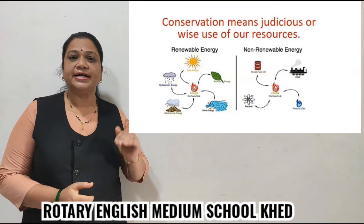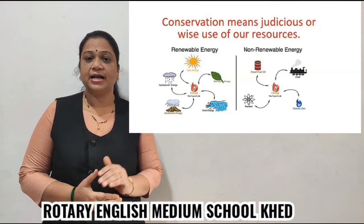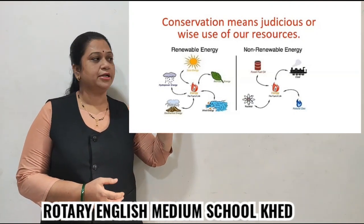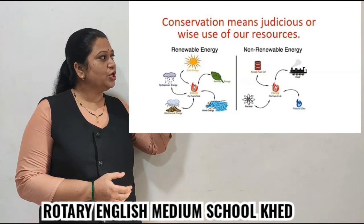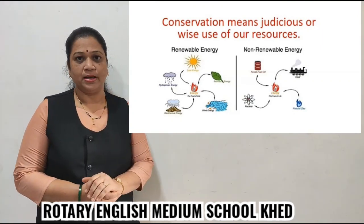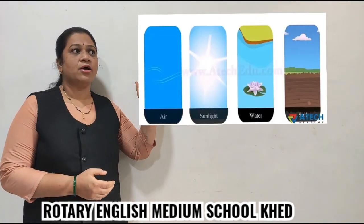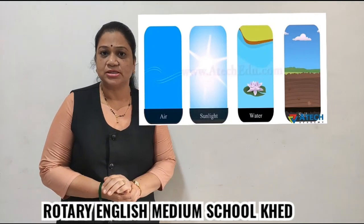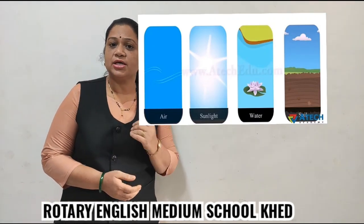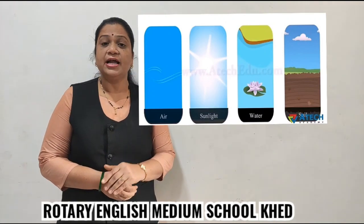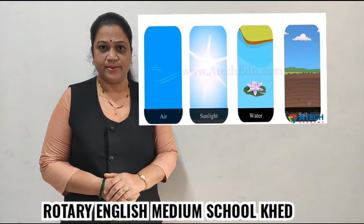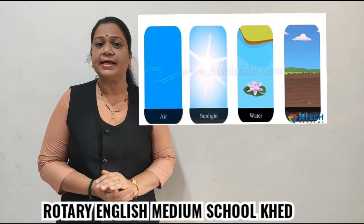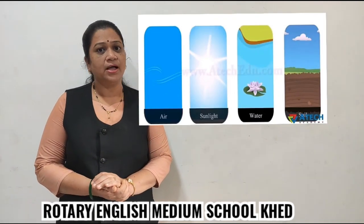As you have studied earlier, natural resources are classified into two types: renewable and non-renewable. Air, water, and sunlight are renewable resources, which are also called inexhaustible resources, meaning air, water and sunlight will never get exhausted from the earth.